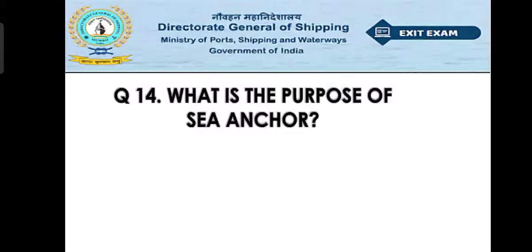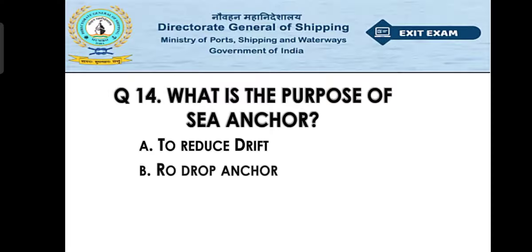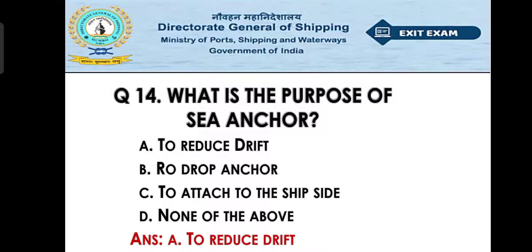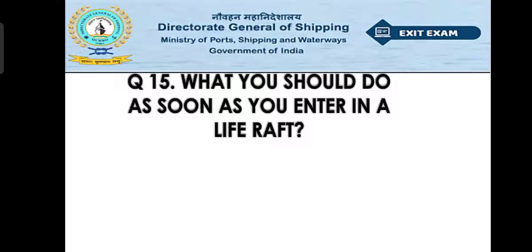Question number fourteen: what is the purpose of the sea anchor? Option A: to reduce drift. Option B: to drop anchor. Option C: to attach to the ship's side. Option D: none of the above. The right answer is option A — to reduce drift. The sea anchor present in the lifeboat and life raft is used only to reduce the drift.